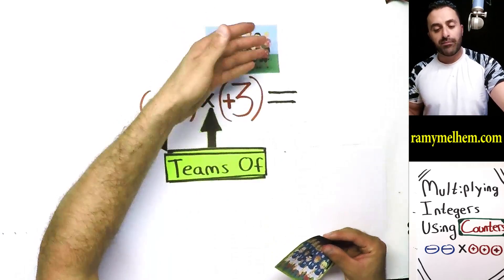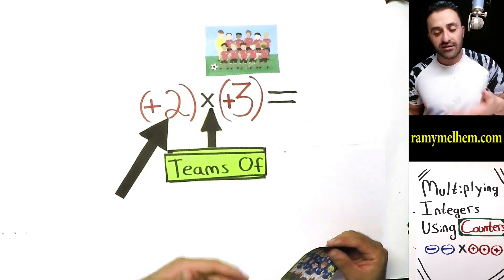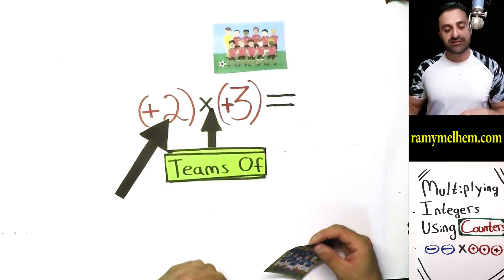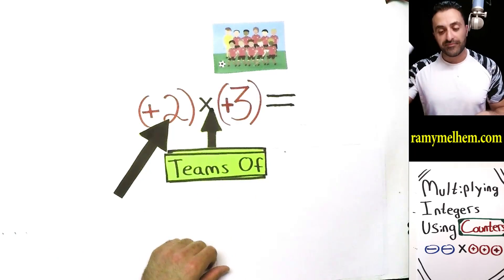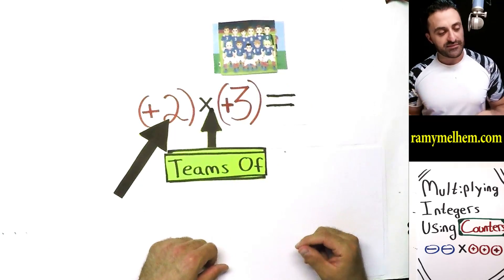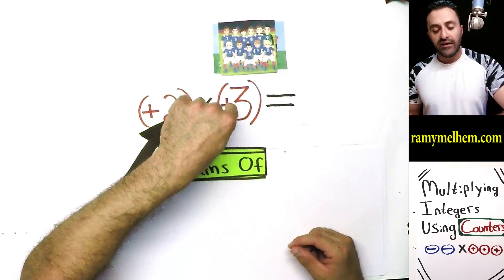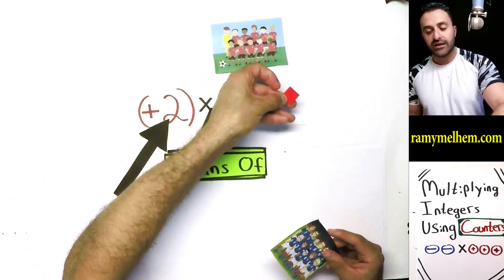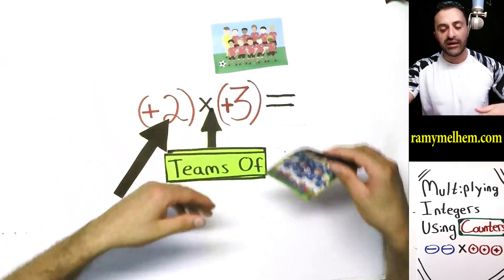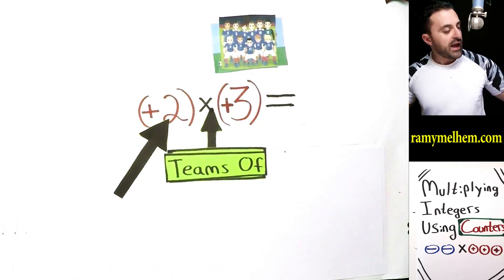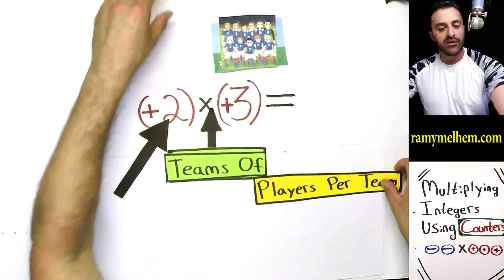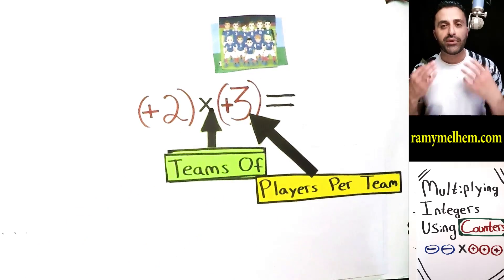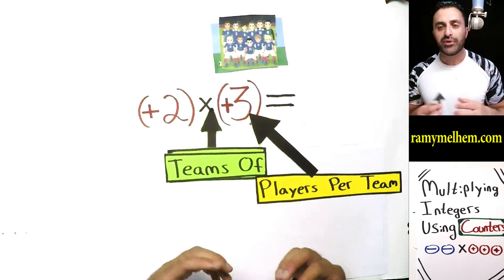We have two options. The positive guys — these are like the good guys — or the blue team, the negatives. If the second number is positive, you're going to pick the red players. But if it's a negative, you're going to pick the blue chips. So think of this second number as the number of players per team — specifically what kind of players.